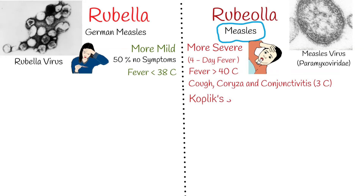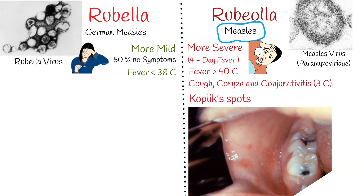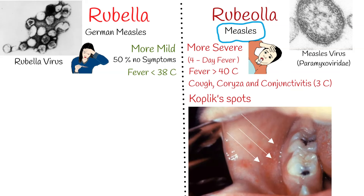An important diagnostic feature for measles is Koplik's spots. Koplik's spots are seen inside the mouth but are temporary and therefore rarely seen. They appear 2-3 days before the measles rash itself and are characterized as clustered white lesions on the buccal mucosa.